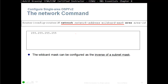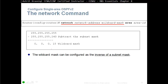The command is 'network', then the network address and the wildcard mask. The wildcard mask is configured as the inverse of the subnet mask — put 255.255.255.255 on top, subtract the subnet mask, and you get the wildcard mask. For example, 255.255.255.255 minus 255.255.255.240 gives wildcard mask 0.0.0.15.